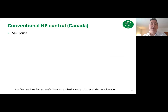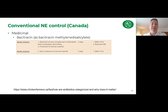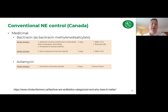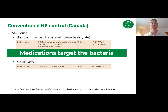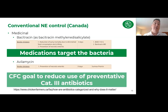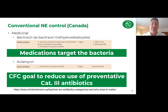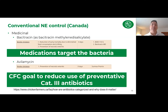Beyond management, there are other known strategies, including medicinal additives. Bacitracin is currently approved as a class three antimicrobial, and avilamycin is currently unclassified or class four. These medicinal additives help target the bacteria themselves. However, Chicken Farmers of Canada has a goal to reduce the use of preventive category three antimicrobials, and some end users of chicken have demanded limitation of certain additives such as avilamycin. So while these tools are still available in certain instances, they may become more limited in the future, which will open up greater risks for necrotic enteritis unless we have alternative control strategies.